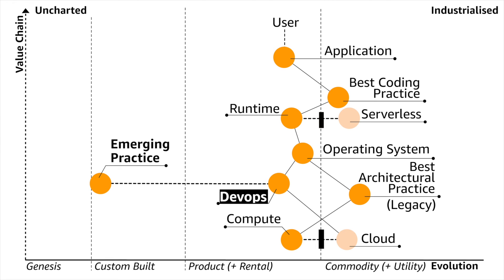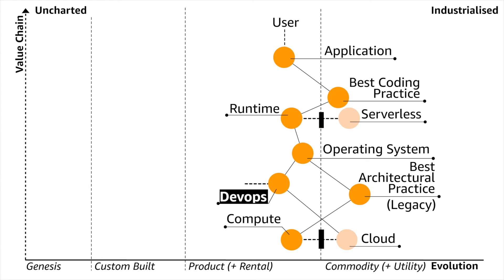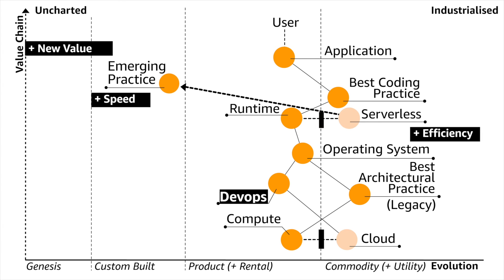Evolution doesn't stop there. Emerging practices continued to evolve and eventually got a name — two friends of mine, Andy and Patrick, called it DevOps. The old best architectural practice got a new name as well: it was called Legacy. In 2014, the runtime shifted from a product to more of a utility space with the introduction of services like AWS Lambda — that's the whole serverless area. And of course, what that created — same as with compute — was new practices, which we now call FinOps, as well as new needs and new sources of value.